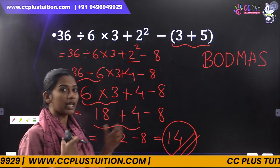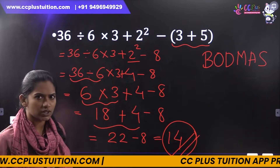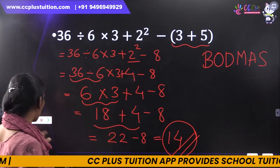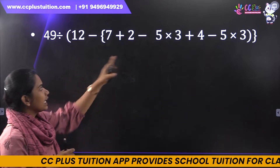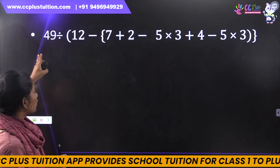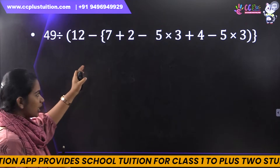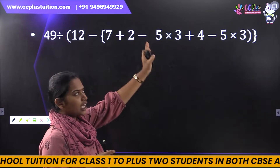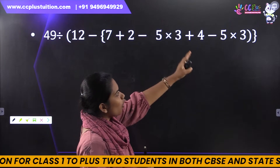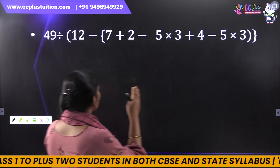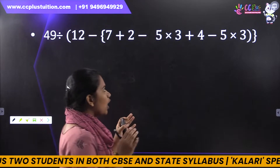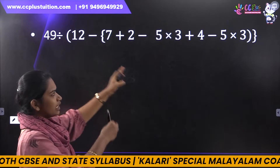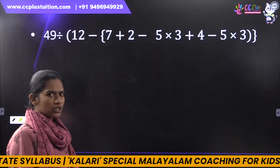We will have the importance of the BODMAS rule. This is a simple equation. For the next equation, here is the question: 49 divided by bracket 12 minus 7, plus 2, minus 5 into 3, plus 4, minus 5 into 3. There are many brackets and many operations — division, multiplication, addition.